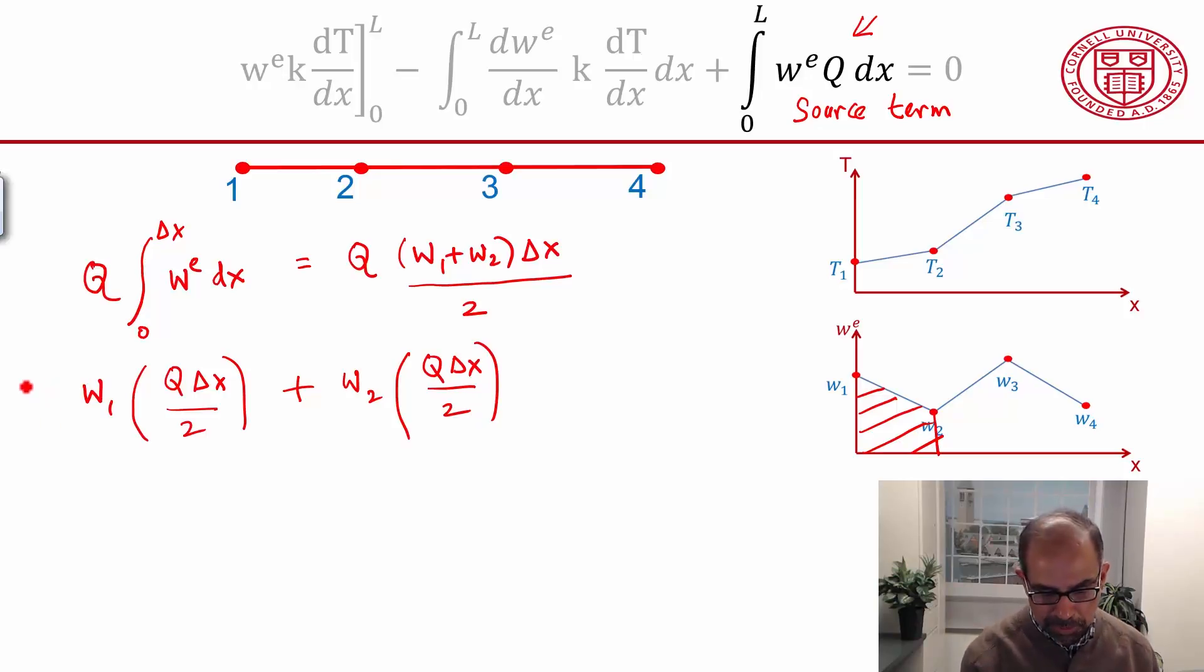If I multiply this by A, which is equivalent to multiplying this by A—in fact, when you do the procedure rigorously, that's what you would do. This term, the term q A delta x—so q is the heat generation per unit volume, and that's a volume. That's heat generated in the element.